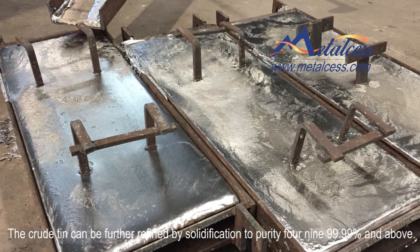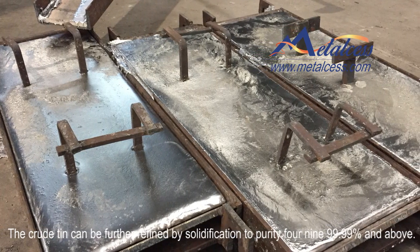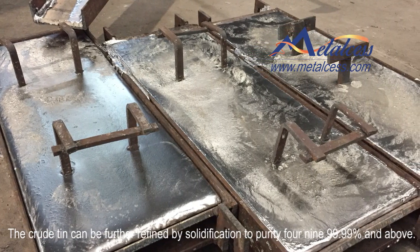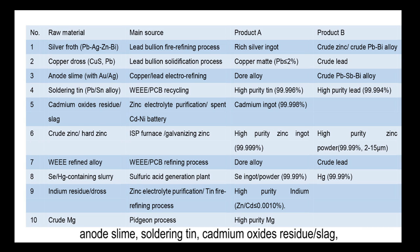The tin can be further refined by solidification to purity 4N grade and above. With vacuum distillation technology, we can treat silver froth, copper jars and slime, soldering tin, cadmium oxidized residues like hard zinc, WE refined alloys, and more.